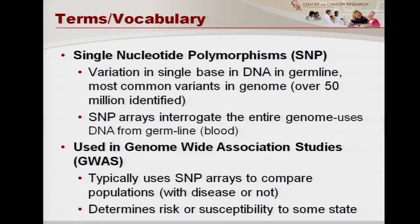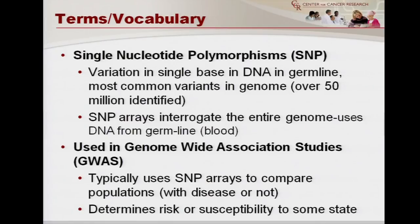SNP arrays are used to interrogate the entire genome, and usually we're looking at DNA from the germline. Remember there's germline and somatic mutations. The germline is how the DNA looks in every cell in a person's body. A somatic mutation is one that specifically happens in a tumor and you don't see in normal cells. SNP arrays are often used in genome-wide association studies, or GWAS, to compare populations in a disease state versus not. Sometimes we use GWAS to look at how certain drugs are handled, since polymorphisms can affect drug metabolism. They're often used to determine risk or susceptibility to a disease state, drug mishandling, or cancer risk.